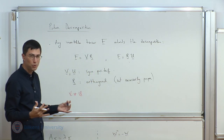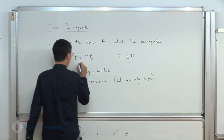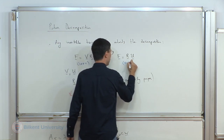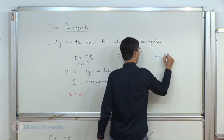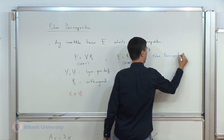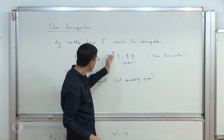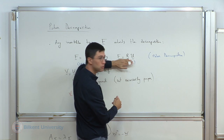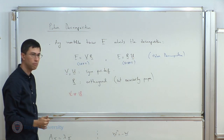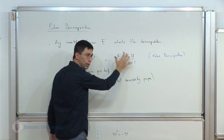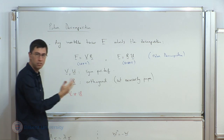These decompositions have names. The decomposition F equals V times R is called the left polar decomposition, and F equals R times U is called the right polar decomposition. The naming has consequences: we will eventually have tensors called left and right depending on whether U or V implicitly appears in them.